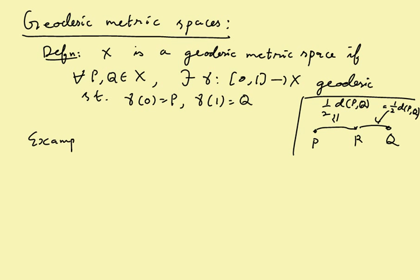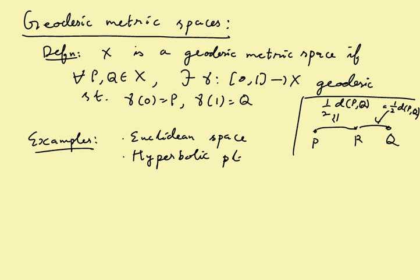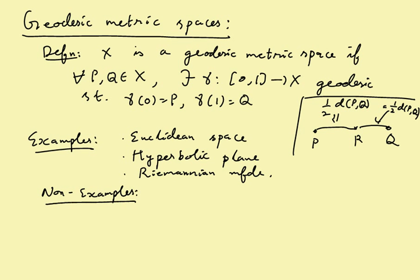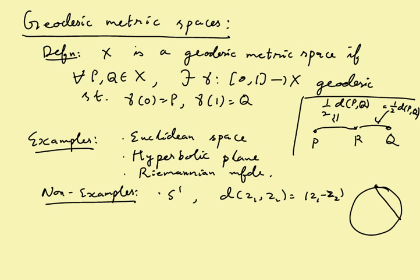Examples include Euclidean space, the hyperbolic plane (whose geodesics we've seen), and in general Riemannian manifolds. For non-examples: take S^1 with distance |z_1 - z_2| (chord length). The chord is strictly shorter than the arc joining two points, so it's not a geodesic metric space. This can be corrected by changing the distance to arc length — and often we can make spaces into geodesic metric spaces, which is why it's a reasonable assumption.